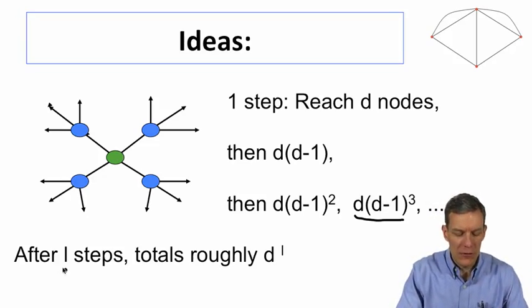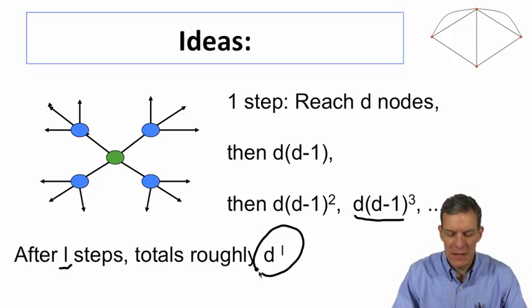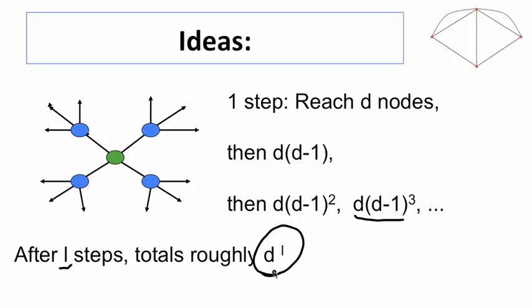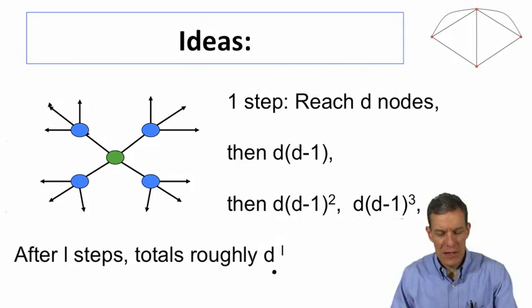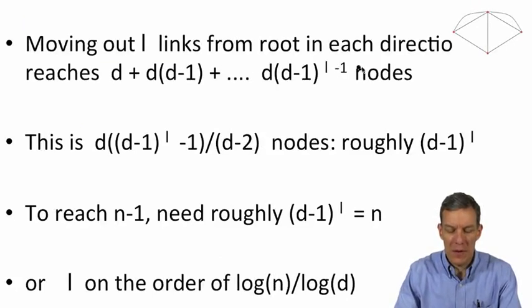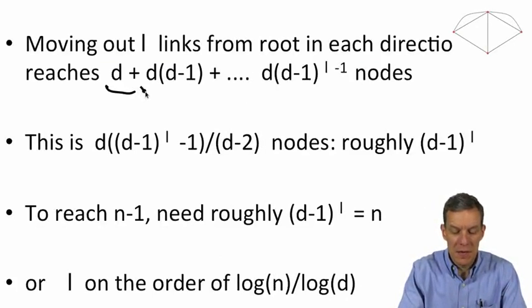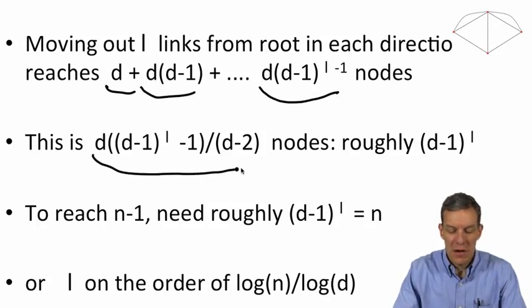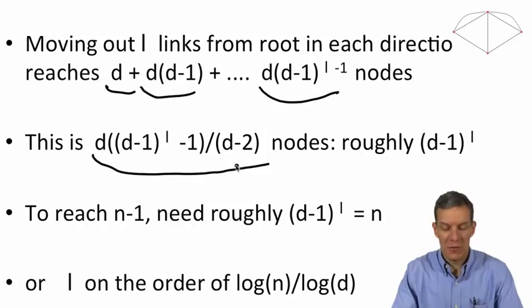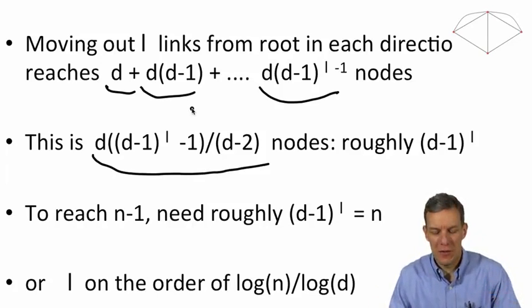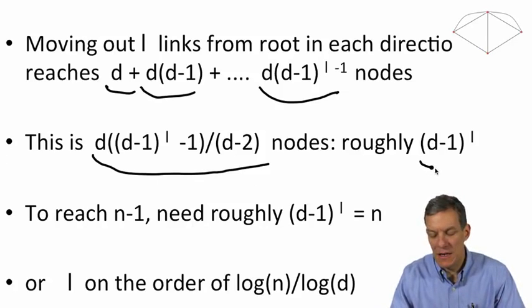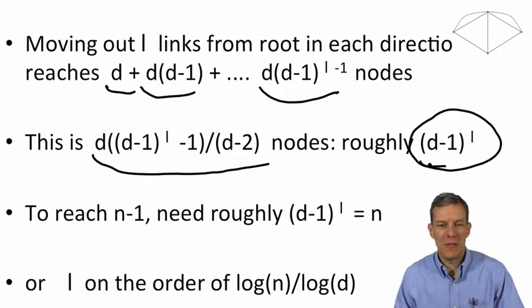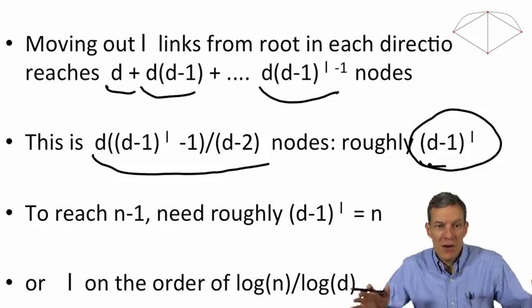So after L steps, after we've gone out L steps, we've reached roughly d to the L nodes in total. So if you move out L links from the root in each direction, we're hitting d plus d times d minus one, and so forth. You total all this up, this looks like d times d minus one to the L minus one over d minus two. But roughly, for reasonably large d, this is going to begin to look like d minus one to the L. So this captures how much you're reaching out, and you're reaching out exponentially.